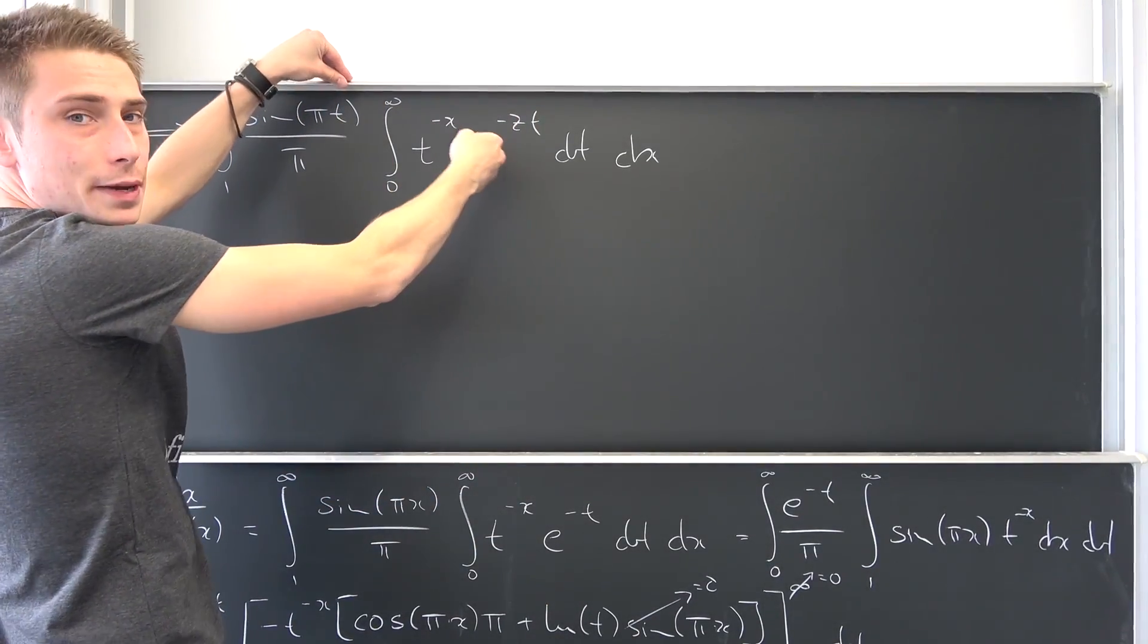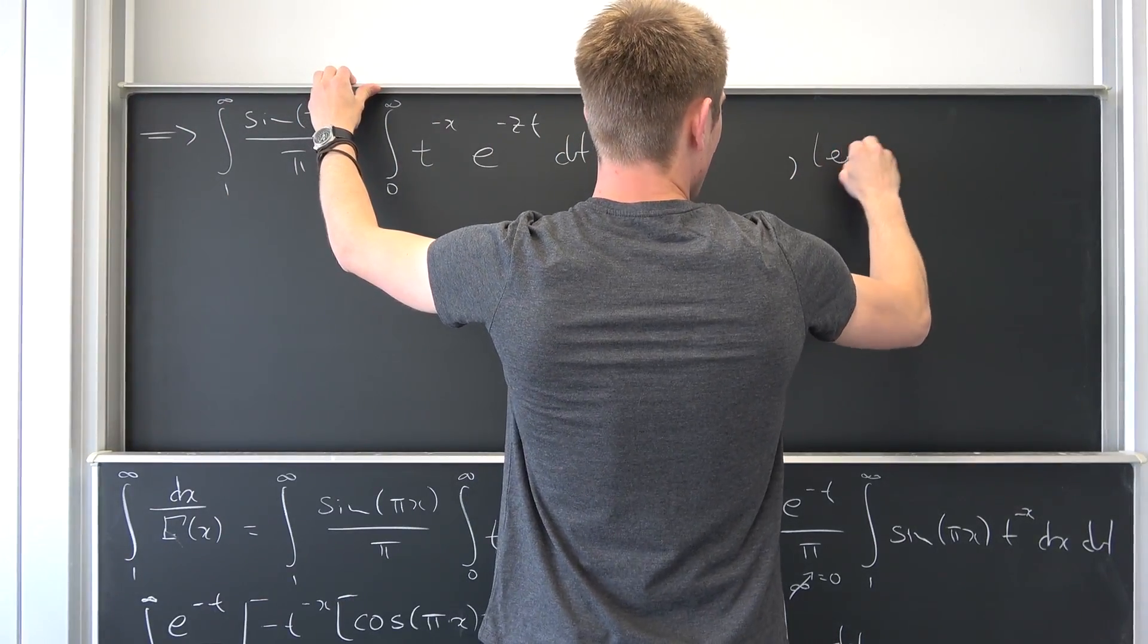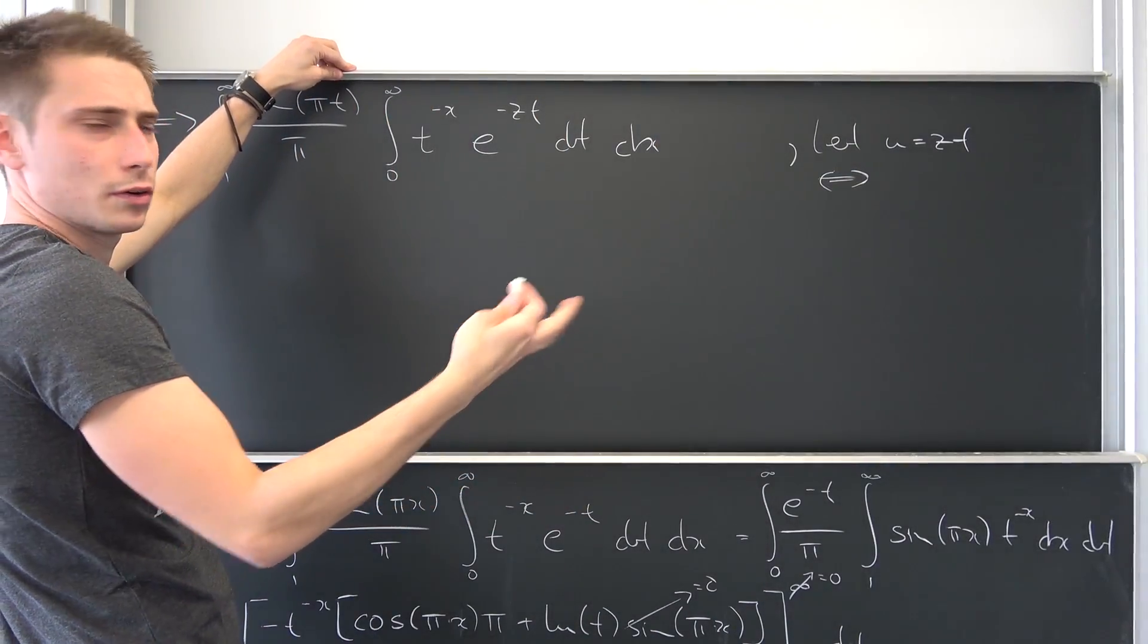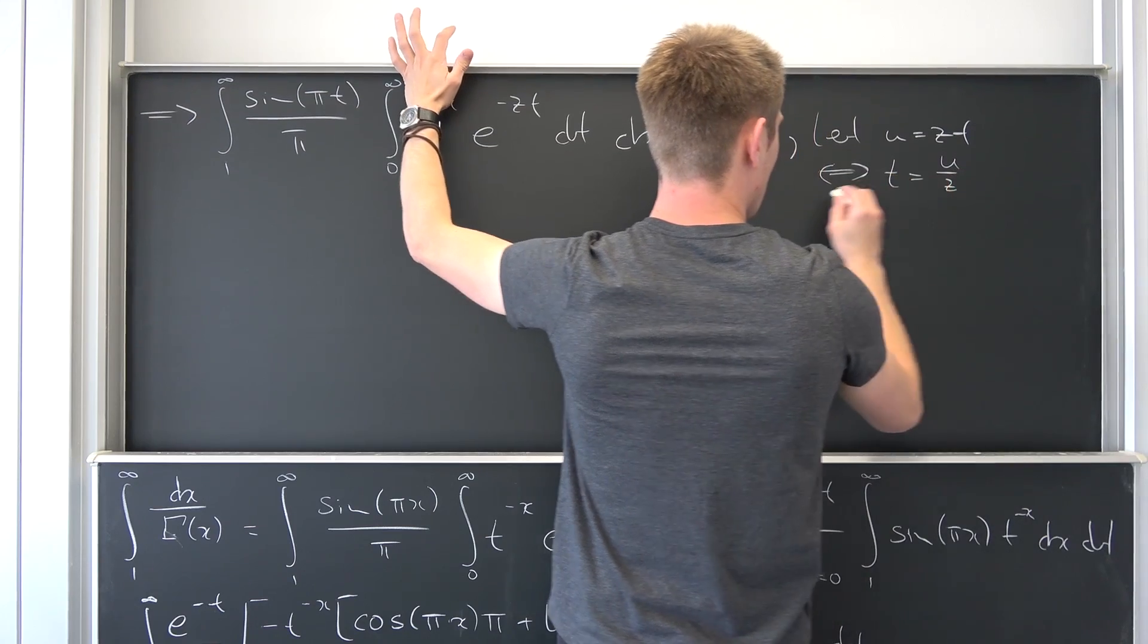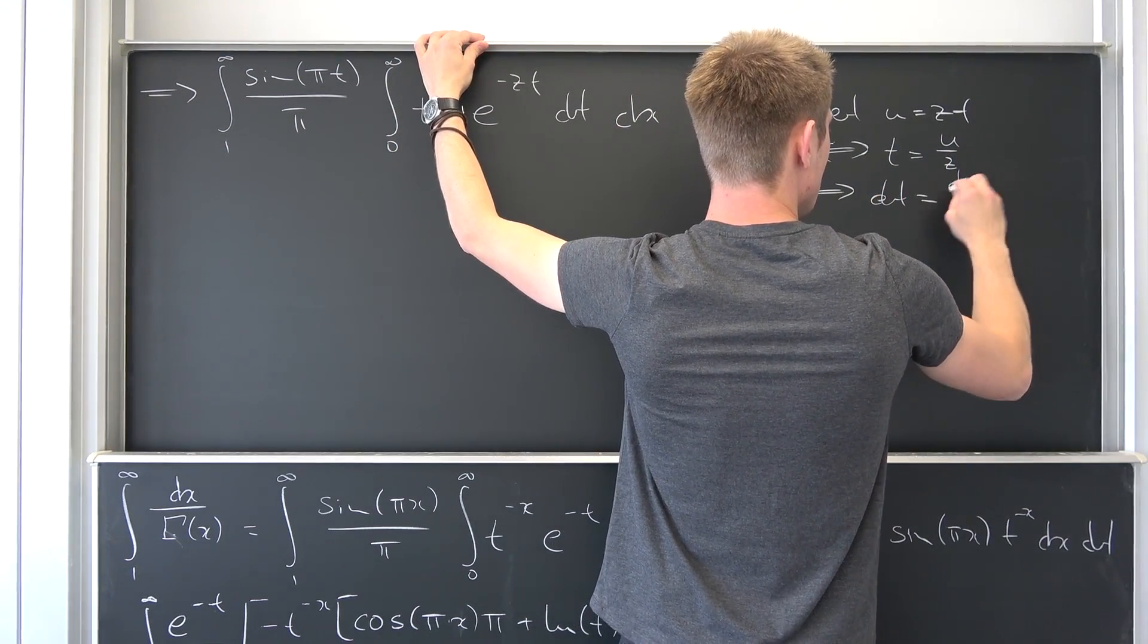Now we can actually trace this back to the gamma function once again. This is something that works out. Let for example u be equal to z times t. That's equivalent to saying, if z is not equal to zero, doesn't matter right now, t is nothing but u over z. Now we can differentiate both sides. Then dt is nothing but du over z.